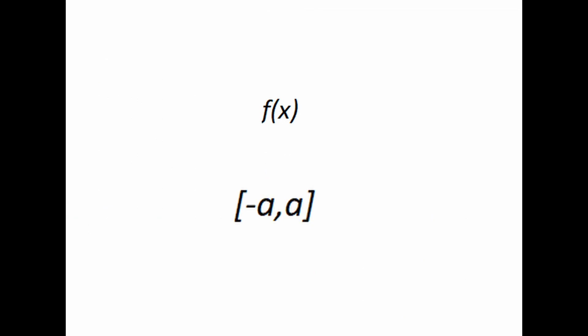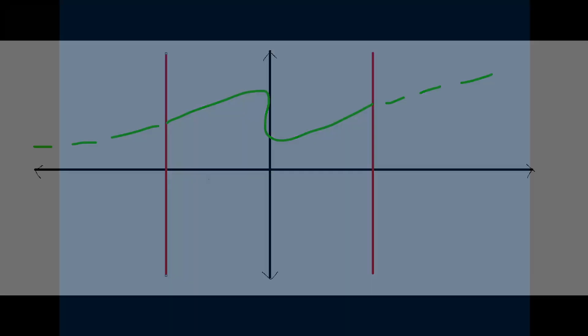Say we have a function f defined over minus a to a. Given the coordinate system and the bounds, this is a function. Now we want to know its behavior beyond the given domain. This is where we need analytic continuation. So what is analytic continuation? Analytic continuation is the technique to extend the domain of a given analytic function.